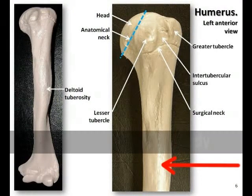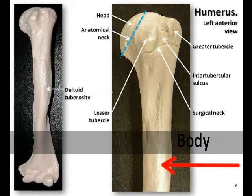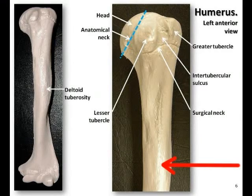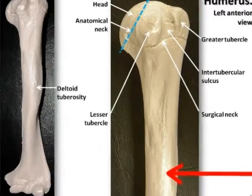The body or shaft is more cylindrical at the proximal end of the bone, then becomes more triangular, and then takes on a broader and flatter shape towards the distal end.